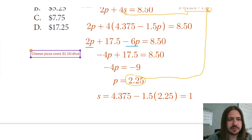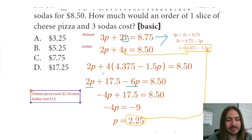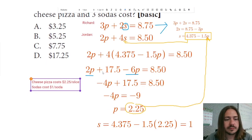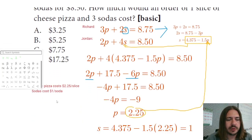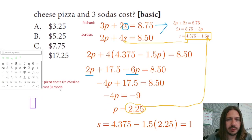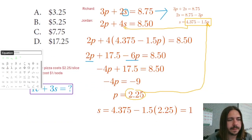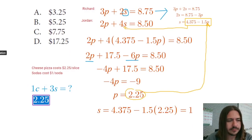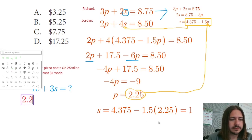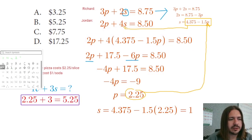So let's go back to our conclusions. Cheese pizza costs $2.25 a slice, and sodas cost $1 per soda. The question asks how much an order of one cheese pizza and three sodas would cost. One pizza at $2.25 plus three sodas at $1 each equals $2.25 + $3.00 = $5.25, which is choice B.